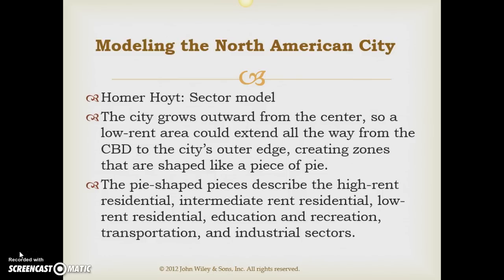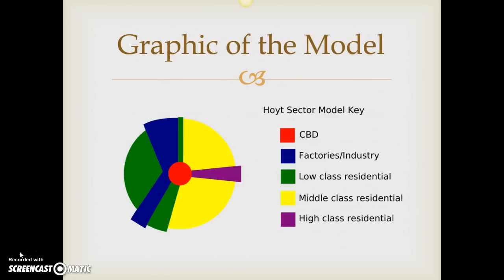The Sector Model also includes an education and recreation section, and those pie pieces are based around transportation routes. So it incorporates and accounts for changes in transportation. There are also industrial sectors. Those lines in between the different types of segments — this is just a generic version of the model — those are our transportation routes. They might be major arterials like big roads for cars, major bus routes, train routes, or at least in theory a river or some kind of water route. That's an important thing to remember.